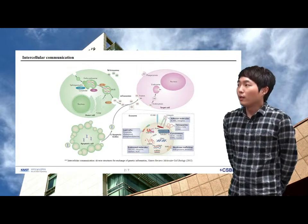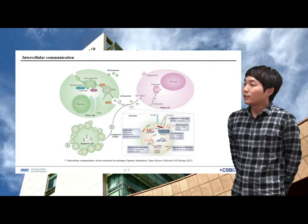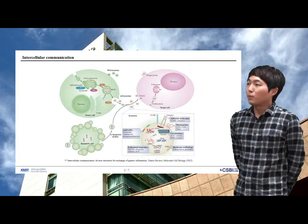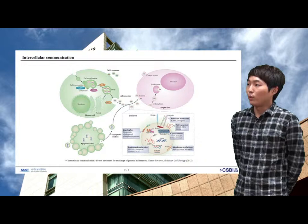Intercellular communication with extracellular vesicles originates through at least three mechanisms. First, the fusion of multivesicular bodies with the plasma membrane and the release of their intraluminal vesicles as exosomes.